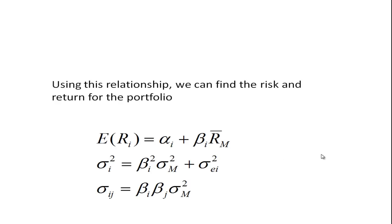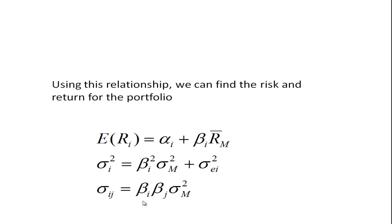Alpha is a constant, so its expected value is just itself. Beta i is also a constant, giving beta i times the expected return of the market. Through further statistical manipulation, the variance of i is beta i squared times the variance of the market, plus the variance of the error term — essentially a noise variance. The covariance between i and j is beta i times beta j times the variance of the market. So if you know the beta for each stock and the market variance, you can calculate the covariance between any two stocks.